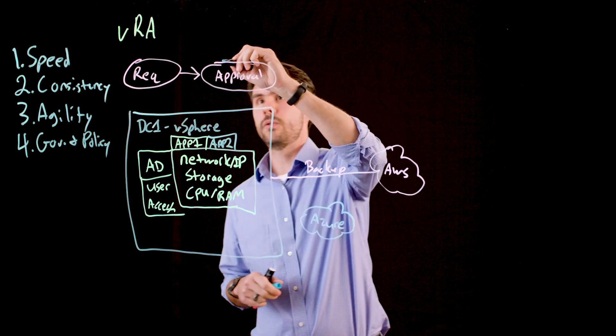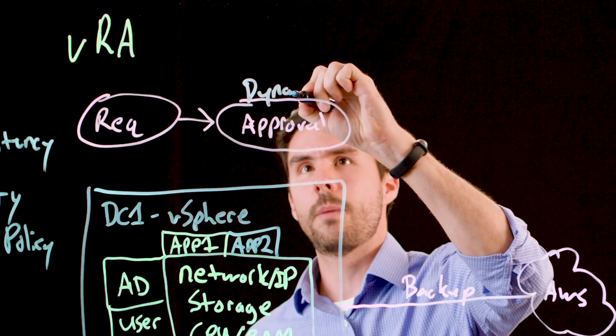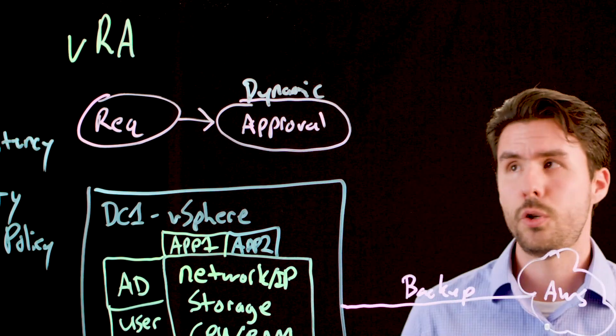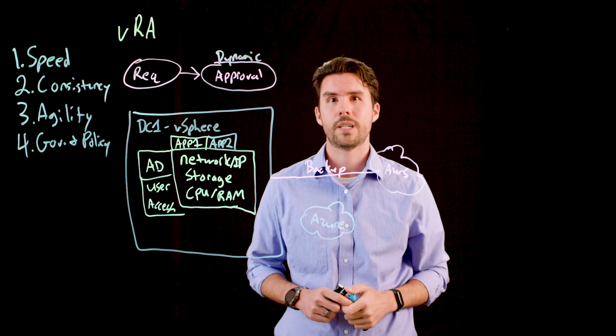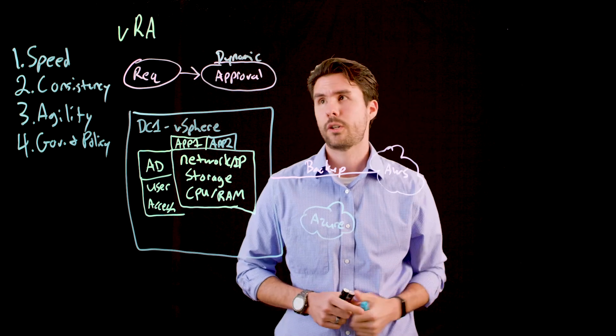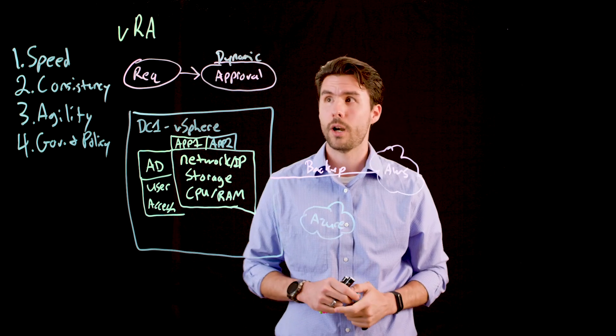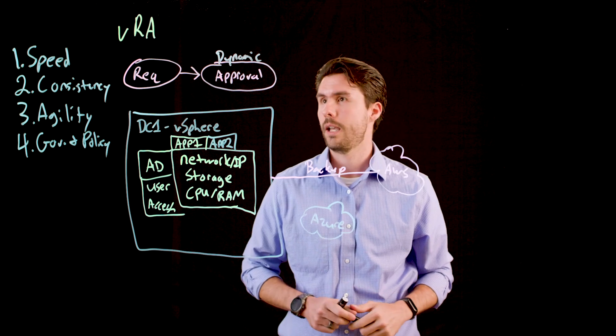It also gives you the ability to do dynamic approvals. What I mean by that is, let's say user A requests a VM for 4 gigs. You may want that to be automatically approved, but when that same user requests a VM of 32 gigs, you might want that to trigger a separate approval. VRA can help accommodate that.